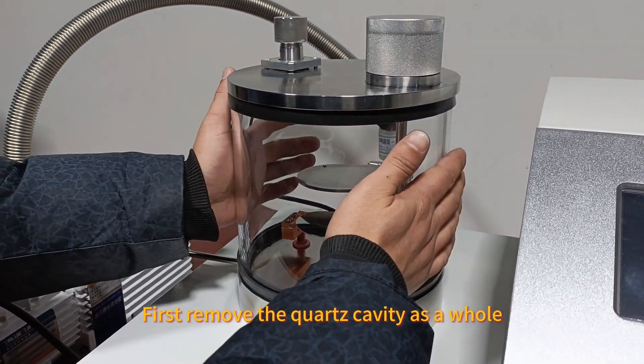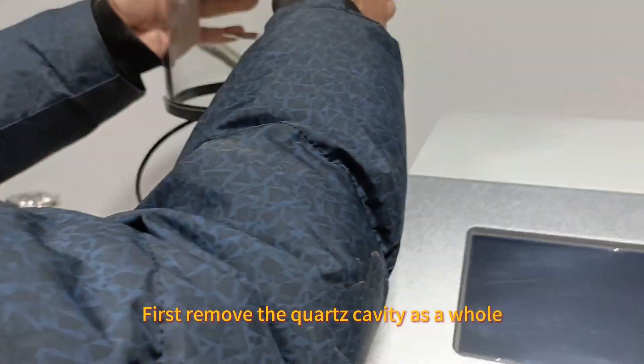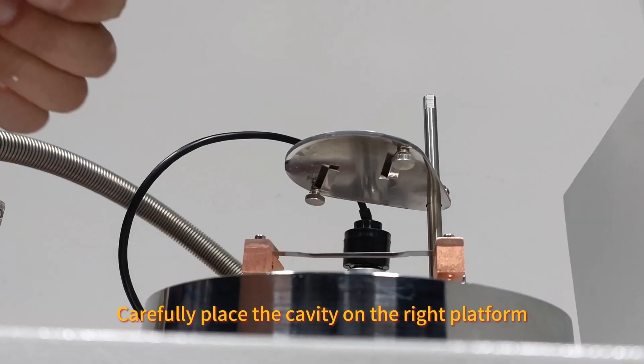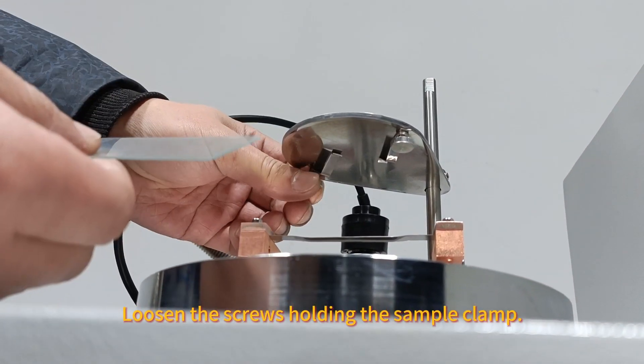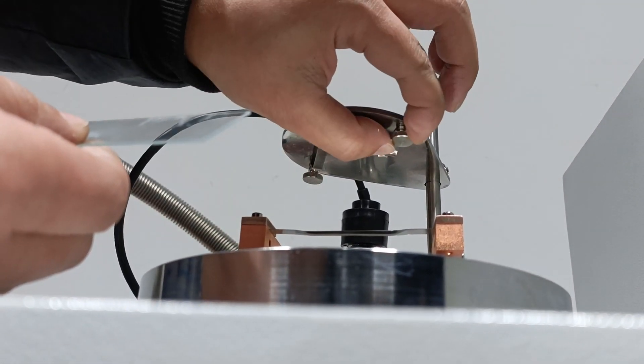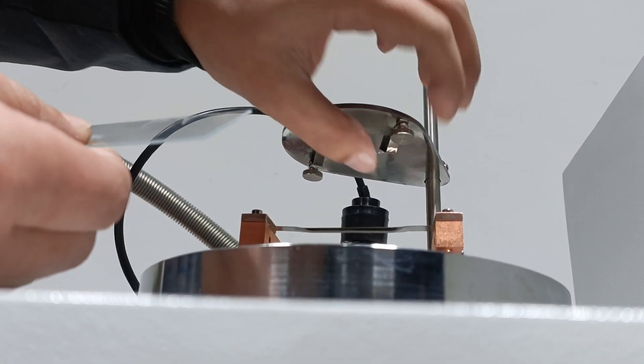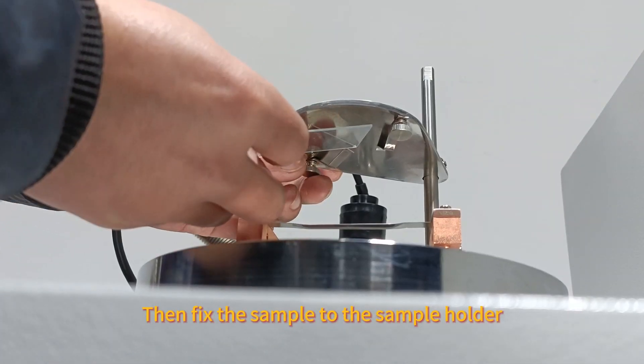Next, put the sample. First, remove the cross cavity as a whole. Carefully place the cavity on the right platform, then loosen the screws holding the sample clamp and fix the sample to the sample holder.